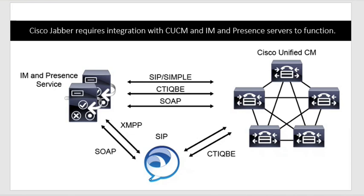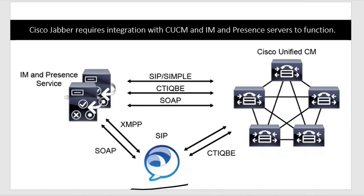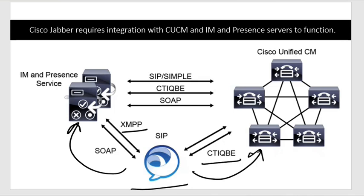Jabber, as the client, connects with both IM&P and CUCM to get its services. It gets functions like instant messaging and presence from the IM&P server, and functions like call routing and call features from CUCM. The protocols used are XMPP — Extensible Messaging and Presence Protocol — and CTI/QBE.